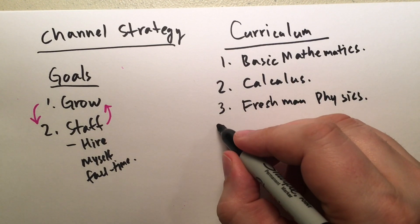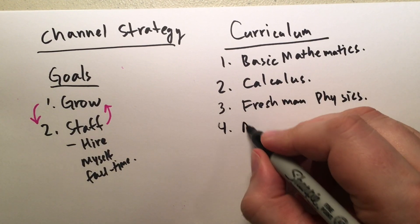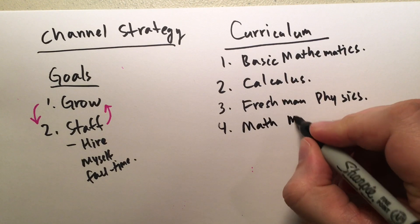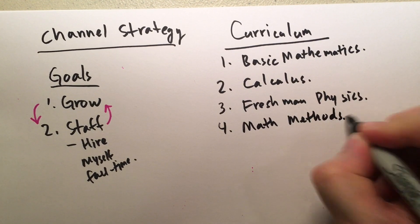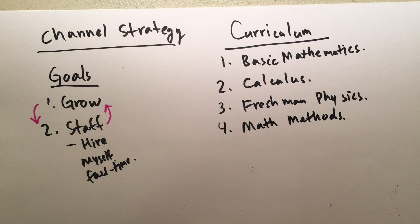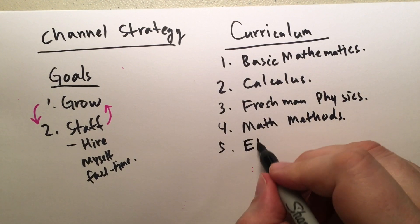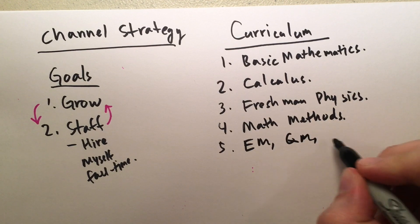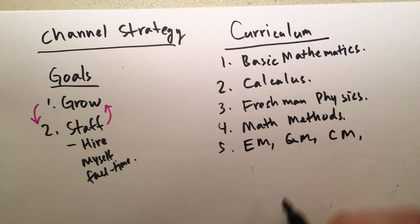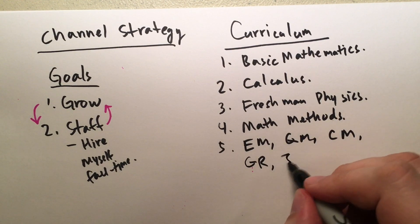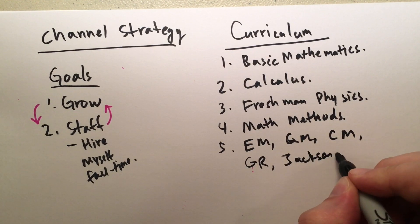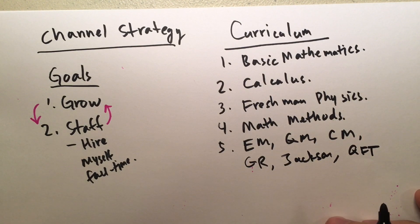So freshman physics. And then after that, then we can go through, I'm probably going to do mathematical methods for the physical sciences by Mary Boaz. She's from the University of Washington where I went to school. And from there, pretty much whatever. We can do EM, QM, classical mechanics. We can do general relativity. After EM, we'll probably do Jackson's. And then quantum field theory is probably going to be the capstone there.